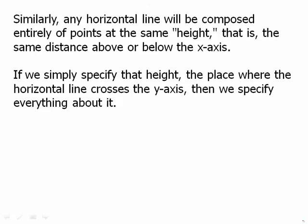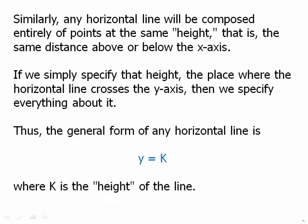If we simply specify that height, the place where the horizontal line crosses the y-axis, then we specify everything about it. Thus, the general form of the horizontal line is y = k, where k is the height of the line.